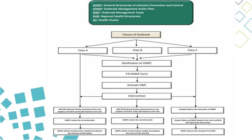The flow chart below explains the reporting process, responsibilities, and interventions that each health facility, regional directorate, health cluster, and the general health department of infection control must take to follow up the outbreak. For more details, refer to coordinator roles and responsibilities. Thank you.